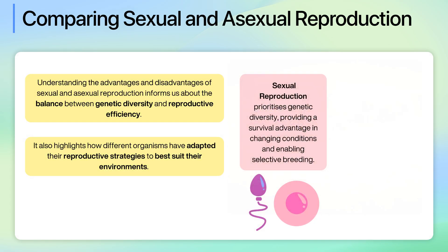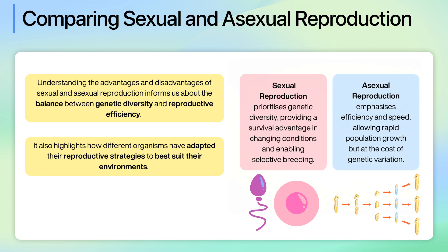Sexual reproduction prioritises genetic diversity, providing a survival advantage in changing conditions and enabling selective breeding. In contrast, asexual reproduction emphasises efficiency and speed, allowing rapid population growth at the risk of reduced genetic variation. Each reproductive strategy has evolved to meet the specific needs and environmental challenges faced by different species.